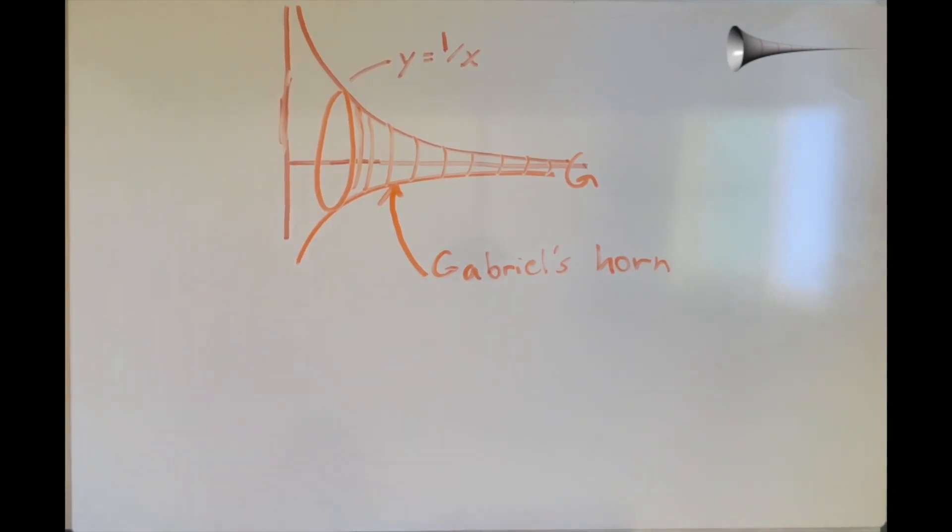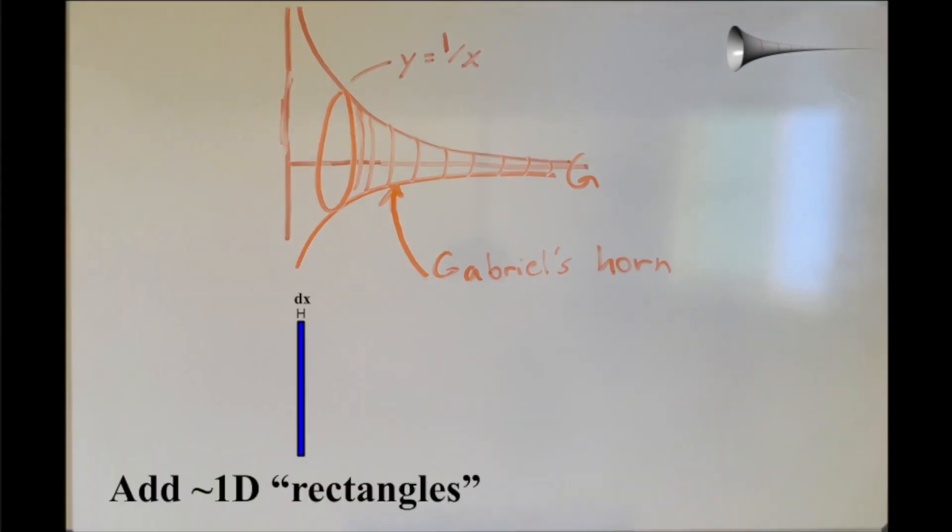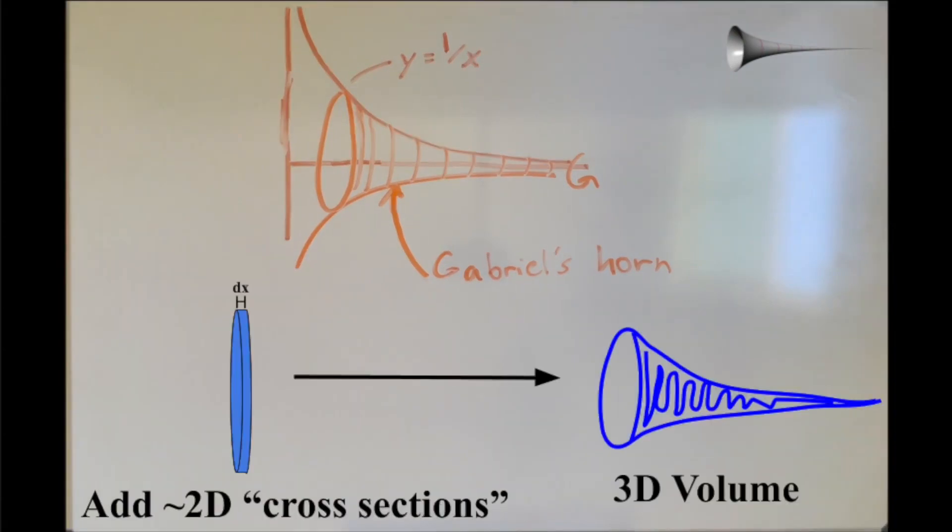In this case, however, instead of adding an infinite number of 1D rectangles to get a 2D area, we're going to add an infinite number of 2D cross-sections to get a 3D volume.